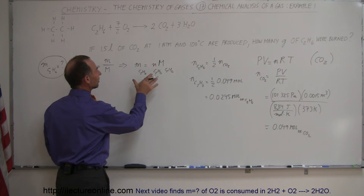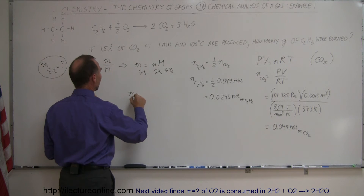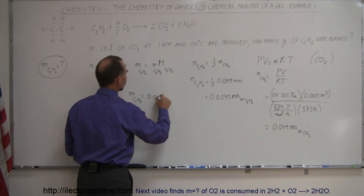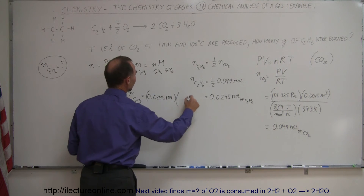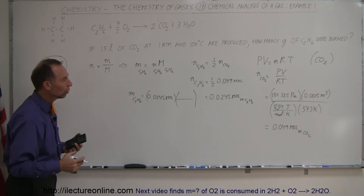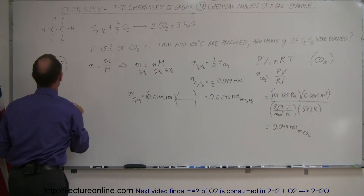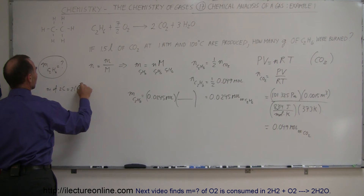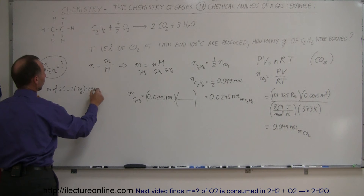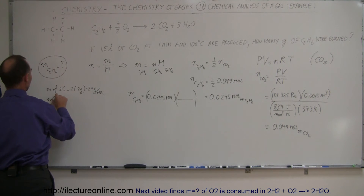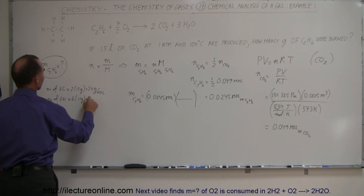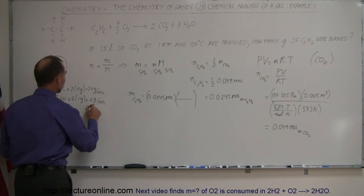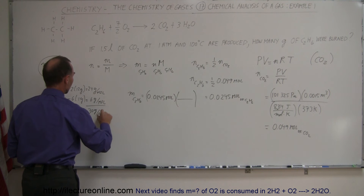Now that we have that, we can find the mass of the ethane consumed. The mass of C2H6 is equal to the moles of C2H6, which is 0.0245 moles, times the molar mass. Ethane has two carbons and six hydrogens. The mass of two carbons is 2 times 12 grams, which equals 24 grams per mole. The mass of six hydrogens is 6 times 1 gram, which is 6 grams per mole of ethane. Together, the molar mass of ethane is 30 grams per mole.